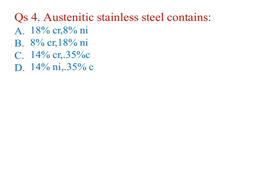Austenitic stainless steel contains 18% Chromium, 8% Nickel. A is the answer.